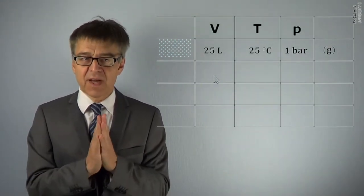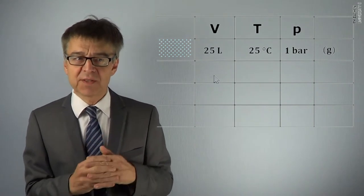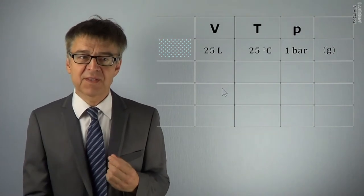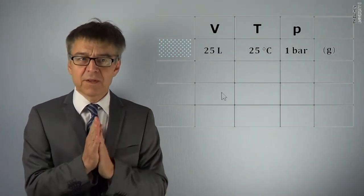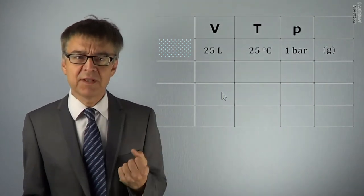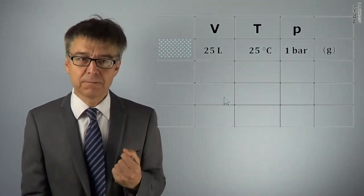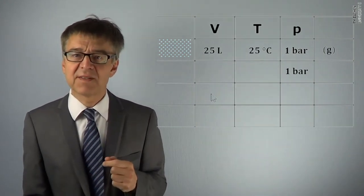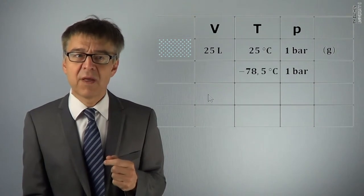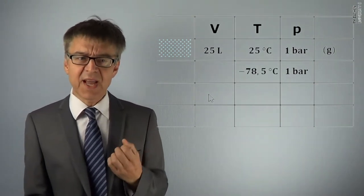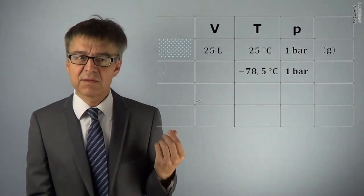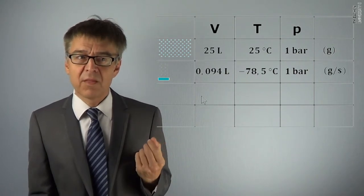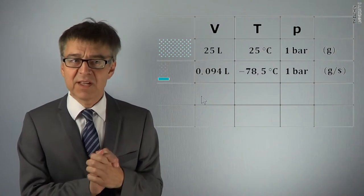We want to extend our phase diagram and include heterogeneous two-phase states, setting conditions in which liquid and solid phases are involved. We start on state 1 and then cool down at constant pressure to negative 78.5 degrees Celsius. In this state, both solid and gaseous carbon dioxide coexist.